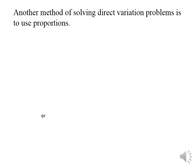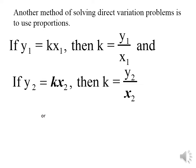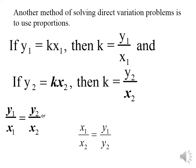Another method to solve direct variation problems is using proportion. As we said, if y equals k times x, in the first case y1 equals k times x1, so k equals y1 over x1. And in the second case, y2 equals k times x2, so k equals y2 over x2. Therefore, in direct variation the division is always constant: y1 over x1 equals y2 over x2, or equivalently x1 over x2 equals y1 over y2. Both are correct.